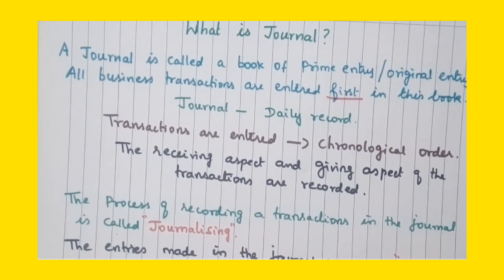Hi, hello and welcome to my channel. This module is about the journal, its format, and is regarding 11th standard accountancy, or even for beginners. The journal is called a book of prime entry, or it is also called as original entry. All business transactions are first entered in this book, hence the name prime entry or original entry.